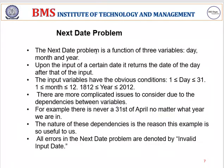The next date problem is a function of three variables: day, month, and year. Upon the input of a certain date, it should return the next date accordingly. The input variables have constraints: day should be between 1 and 31, month should be between 1 and 12, and year should be between 1812 and 2012.